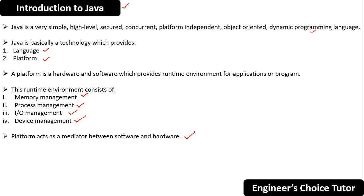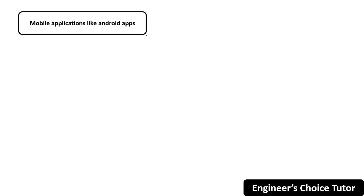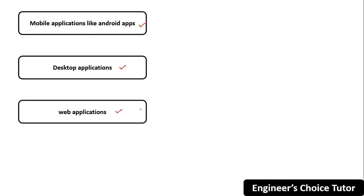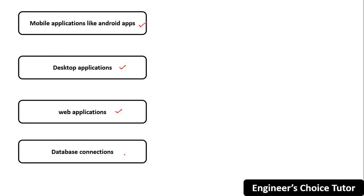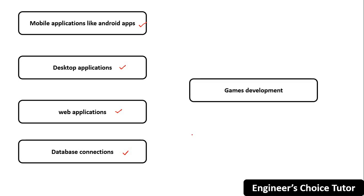Now let's look at the areas where Java is used. Java is used for mobile applications like Android apps, desktop applications, and web applications in the banking domain, medical domain, and education sector. Java is also used for database connections — we have JDBC, which stands for Java Database Connectivity, which we will learn in the advanced concepts.